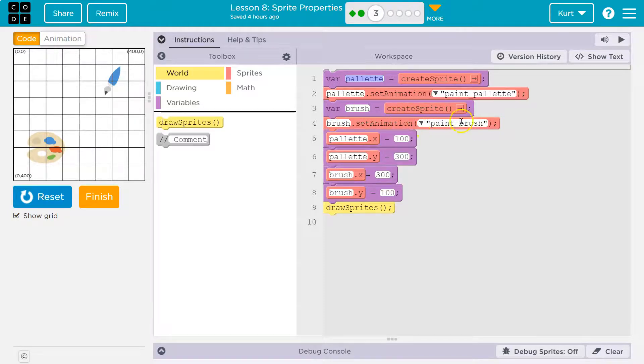So the animation property is set here, right? The image is set here. Now we set the x value or the x property of palette to 100 and the y property to 300. Well, if you look beneath reset right down here, it is 100, 300 roughly. So that makes sense.